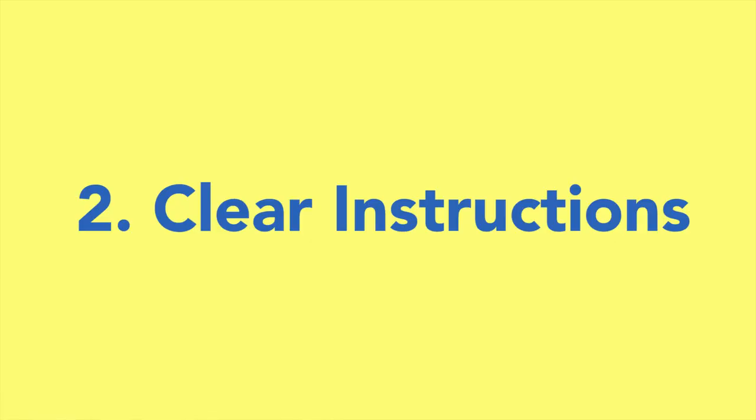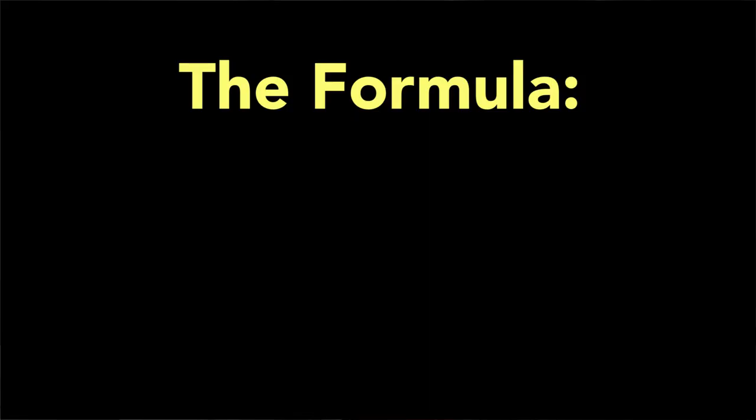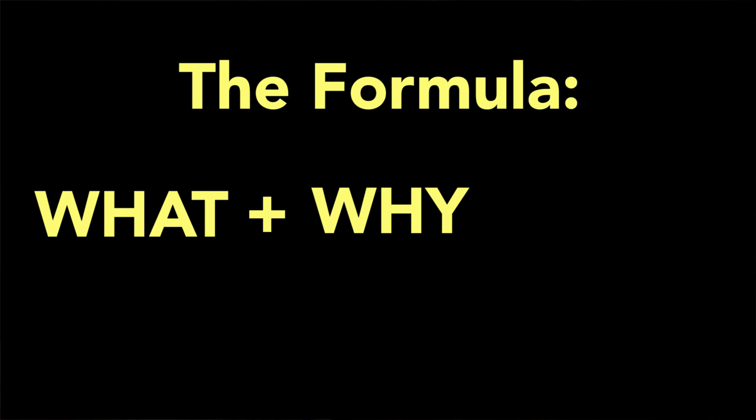Make sure that you're giving clear instructions. This sounds super simple and obvious, but it really makes a massive difference if you use this formula. First, tell people what they're going to do — very simply, in one line, don't use too many words, just: what is the exercise? Then tell people why they're going to do this. This is so important for people to understand when they're doing an exercise that maybe seems a little bit ambiguous to them. You really want them to understand why they're doing it so that they actually care about it.